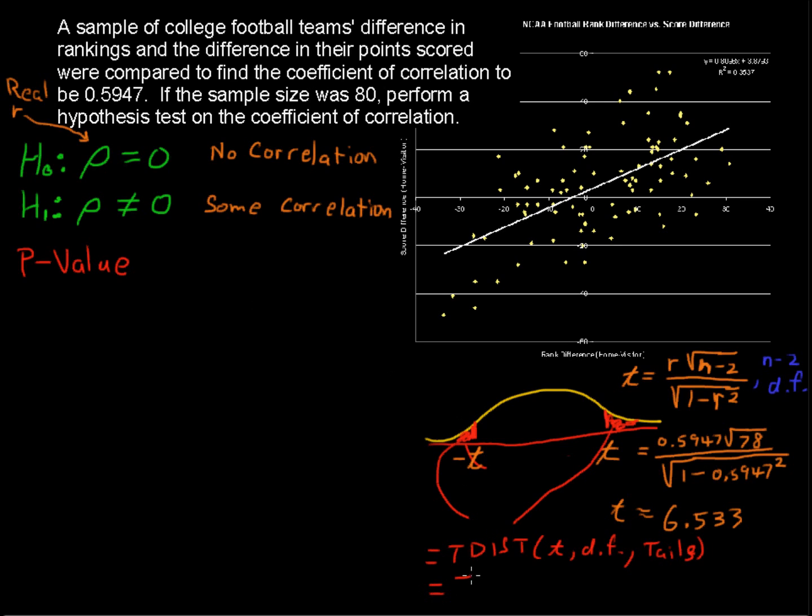So plugging those numbers in, we get tdist of the 6.533. Degrees of freedom is 78. We have 2 tails, and I'm going to put this up here because this is our p-value.